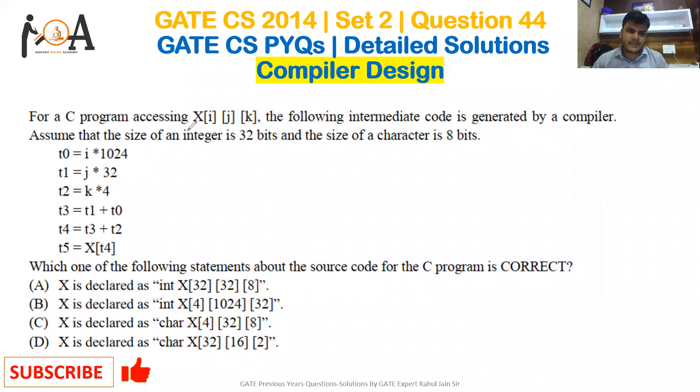The question is: for a C program accessing X[i][j][k], the following intermediate code is generated by a compiler. Assume that the size of an integer is 32 bits and the size of a character is 8 bits. So, size of integer is 32 bits means 4 bytes, and size of character 8 bits means 1 byte.